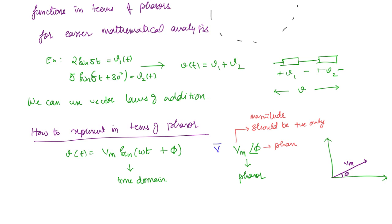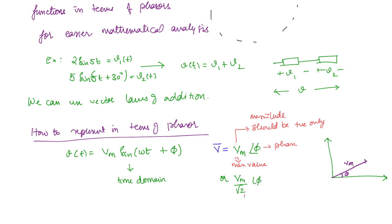This phasor we write as V-bar. Note that in the time domain we use a small letter as a function of time, but for phasors we use a capital letter. Another way of writing: we here wrote the maximum value Vm as the magnitude. But another way is to use the RMS value, so we can write it as Vm/√2 ∠φ. Both are correct. If nothing is mentioned, go ahead with the RMS value.